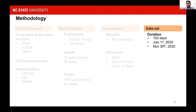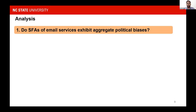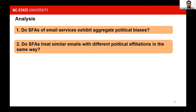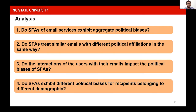We collected data for 153 days, starting from July 1st, 2020, till November 30th, 2020, and we collected more than 300,000 emails. Our analysis comprises four key questions: first, do SFAs exhibit aggregate political biases? Second, do SFAs treat similar emails with different political affiliations in the same way? Third, do user interactions with emails impact political biases of the SFAs? And lastly, do SFAs exhibit different political biases for recipients belonging to different demographics?